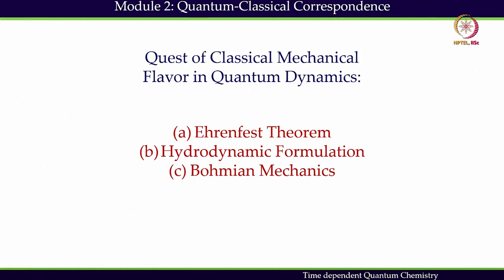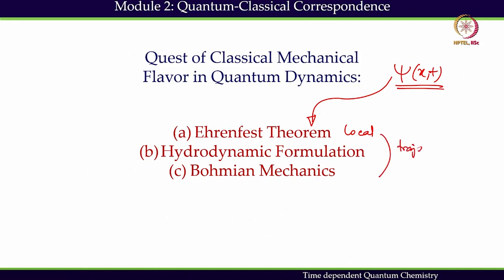However, there are three theorems which can provide the concept of trajectory in quantum dynamics. Our next target is to start with a wave function that is global and delocalized in nature, then transform it through these theorems to obtain local information. Once we get local information, we will be able to construct trajectories. What kind of trajectories we will be able to construct in quantum dynamics is exactly what we are going to study in the next class.